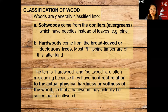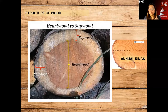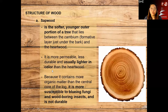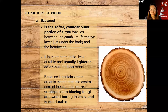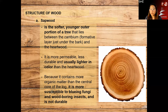This is the anatomical structure of wood. We have the sapwood — the young, softer, outer portion of the tree. As the tree grows, the innermost core is the oldest. The outer circle is what we call sapwood. It is more permeable and less durable, and usually lighter in color because it contains more organic matter than the central core of the log. Since it's still young, it is more susceptible to fungi and wood-boring insects.